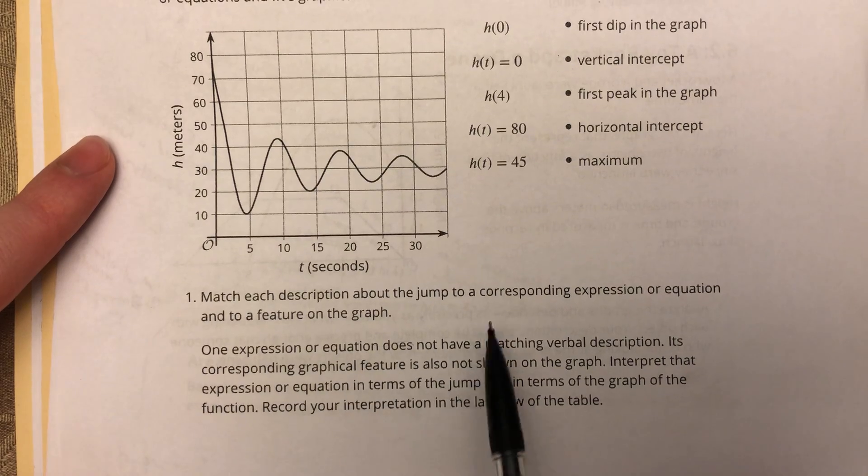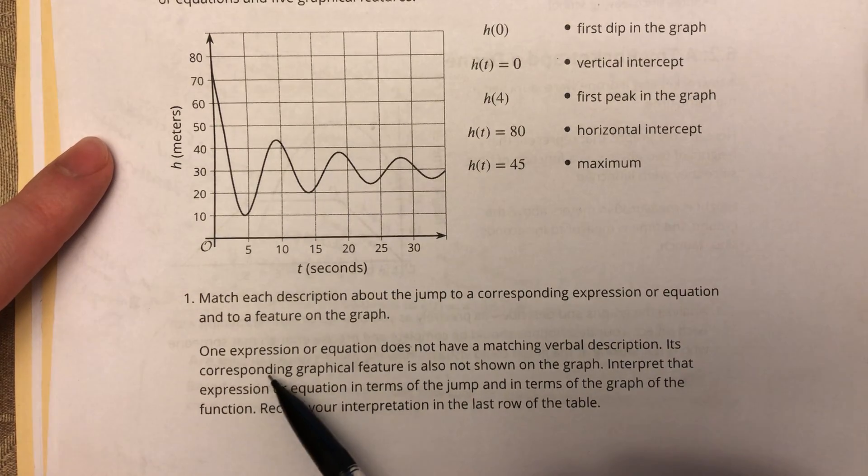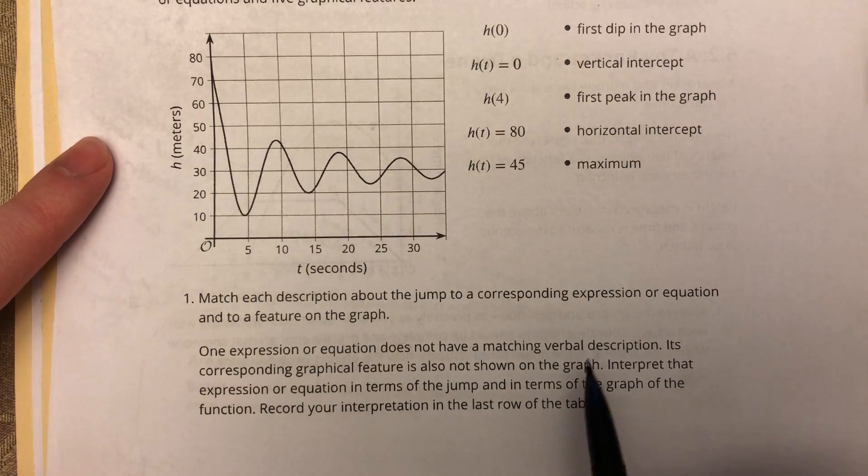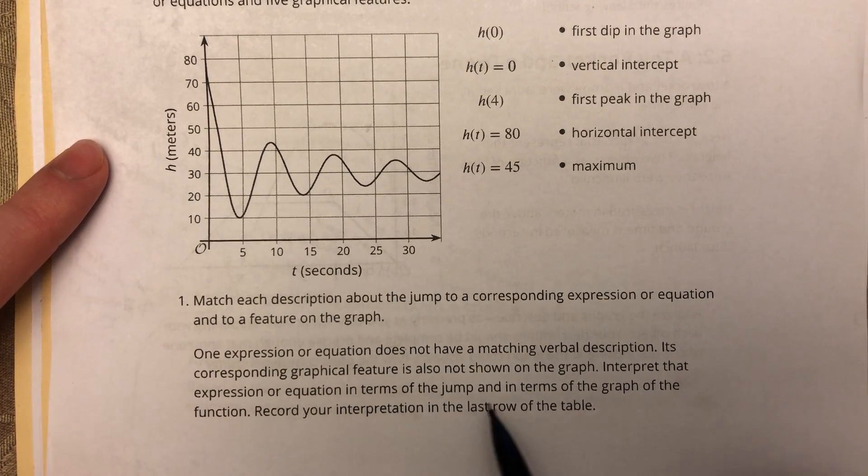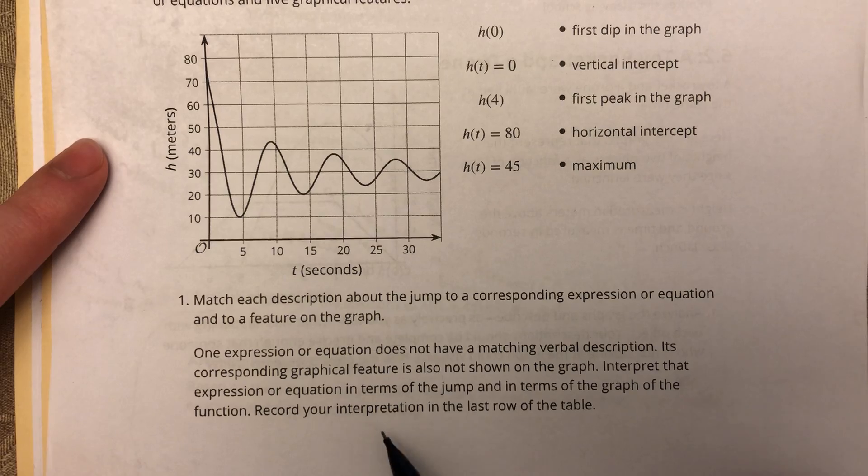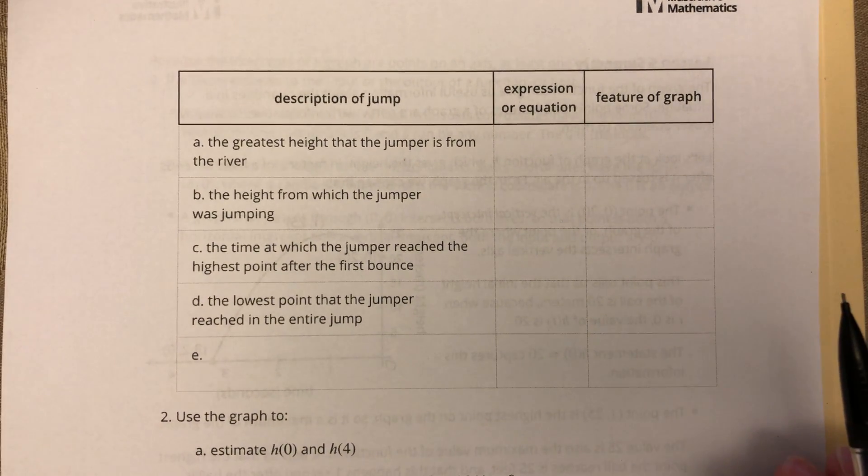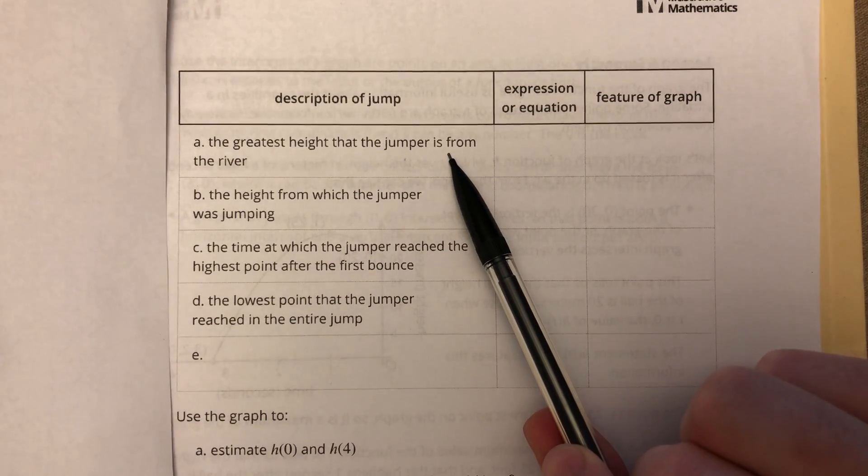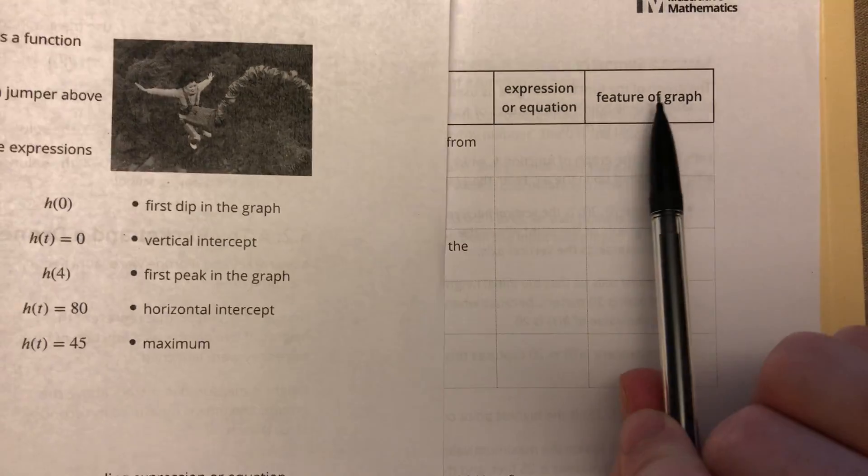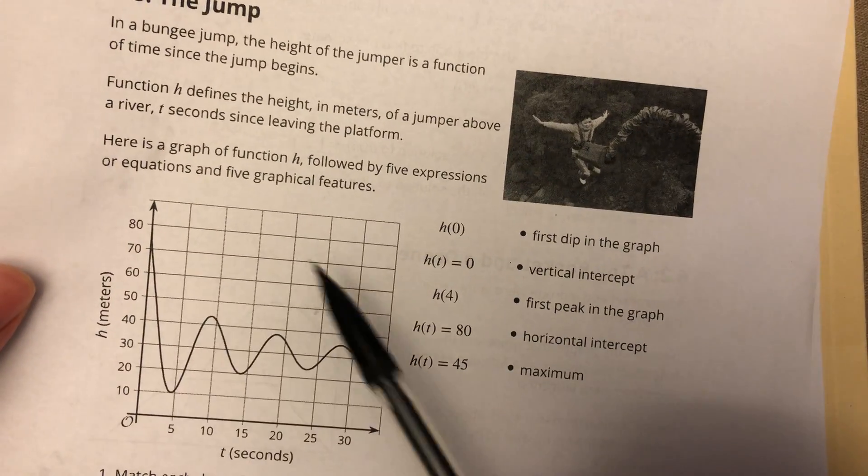So they want us to match each description about the jump to the corresponding expression or equation and to a feature of the graph. One expression or equation does not have a matching verbal description. So one of these does not have an answer that can be found here. Its corresponding graphical feature is also not shown on the graph. So there's also nothing on the graph to show this point. Interpret that expression or equation in terms of the jump and in terms of the graph of the function. Record your interpretation in the last row of the table. So they're talking about this table. If you turn the page, that's page number three on the PDF. This is where you can record all those answers.